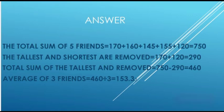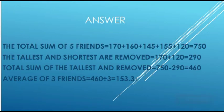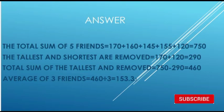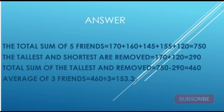The total sum is 3. We remove the total sum. 416 divided by 3 gives 153.33. The total sum is 4.3 and 1.3.